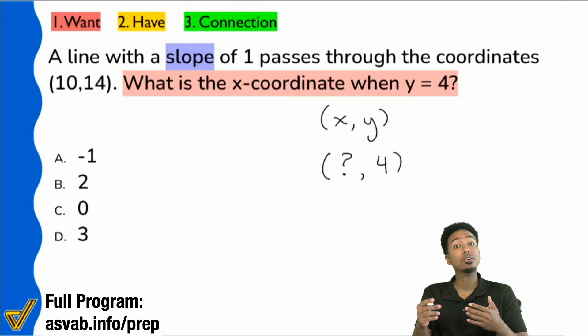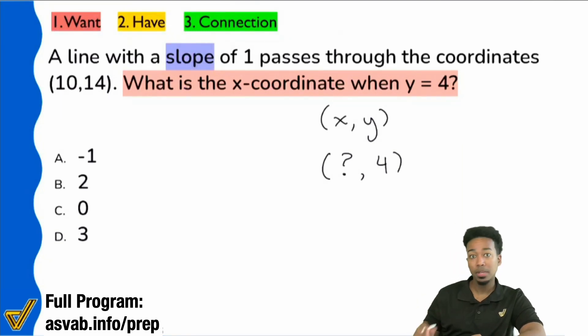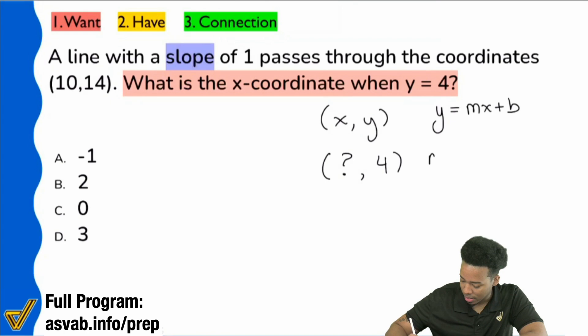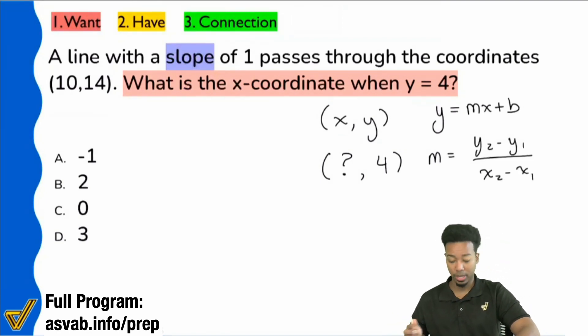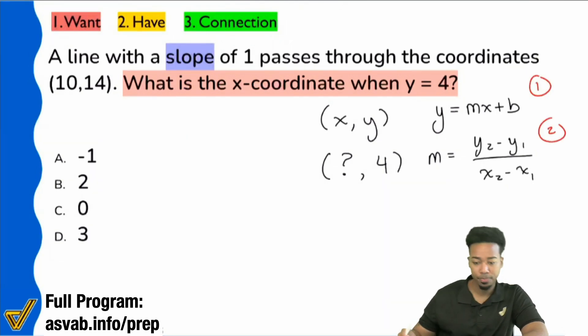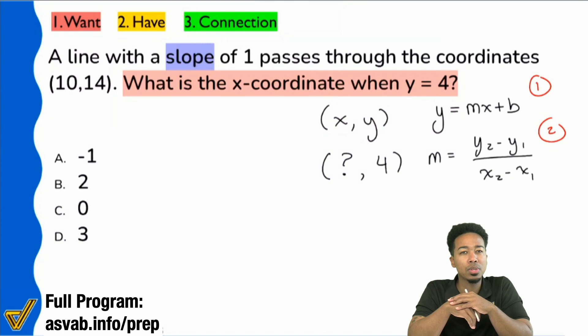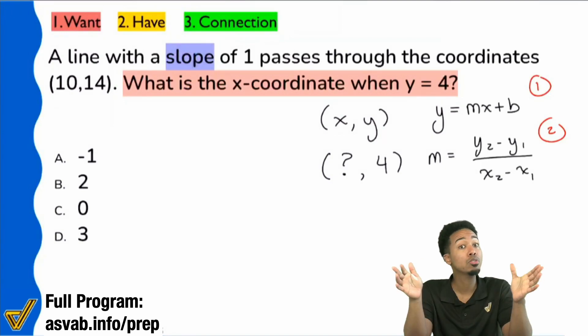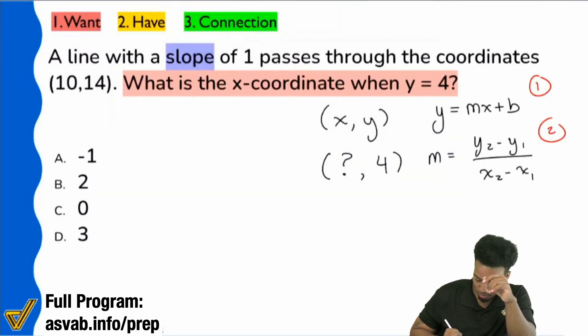Now, a couple of us here might be thinking one of two things. Some of us here might be thinking that we're dealing with a y equals mx plus b problem. And on the other hand, some of us might be thinking that we're using this formula here. m equals y2 minus y1 over x2 minus x1. So let's mark these out here. Formula number one and formula number two.